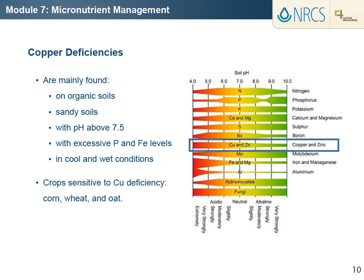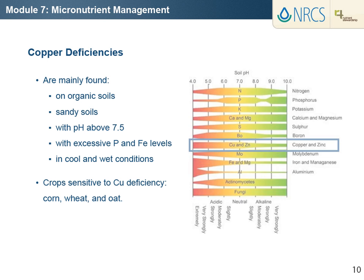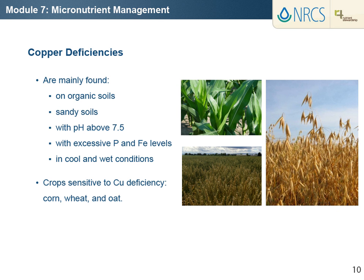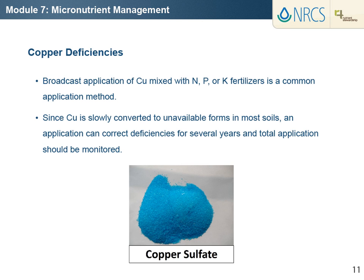Copper deficiencies are mainly found in organic soils, sandy soils, and soil with pH above 7.5. Copper uptake decreases as soil pH increases. Plant roots take up copper as the copper ion. Copper uptake by plants can be reduced by excessive phosphorus and iron availability. Cool and wet conditions favor copper deficiency. Crops more sensitive to copper deficiency include corn, wheat, and oat. Broadcast application of copper mixed with other fertilizers is a common application method. Since the conversion of copper to unavailable forms is slow in most soils, an application can correct deficiencies for several years, with the exception being very sandy soils.